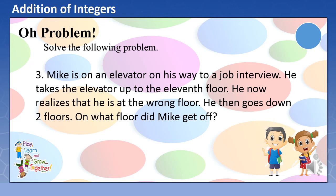For five points, solve the problem. Mike is on an elevator on his way to a job interview. He takes the elevator up to the 11th floor. He now realizes that he is at the wrong floor. He then goes down two floors. On what floor did Mike get off?